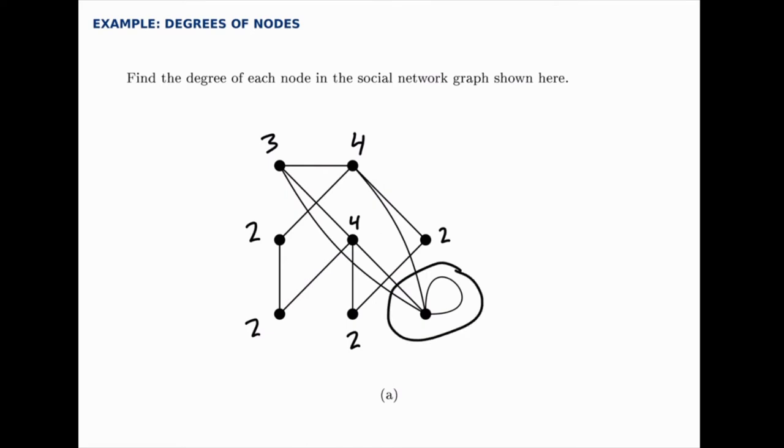And then lastly over here, pay special attention to this one, because a loop is the only part that can be confusing here. If we count edges, there's 1, 2, 3, and then there's a loop, and this loop contributes 2 to the total degree.